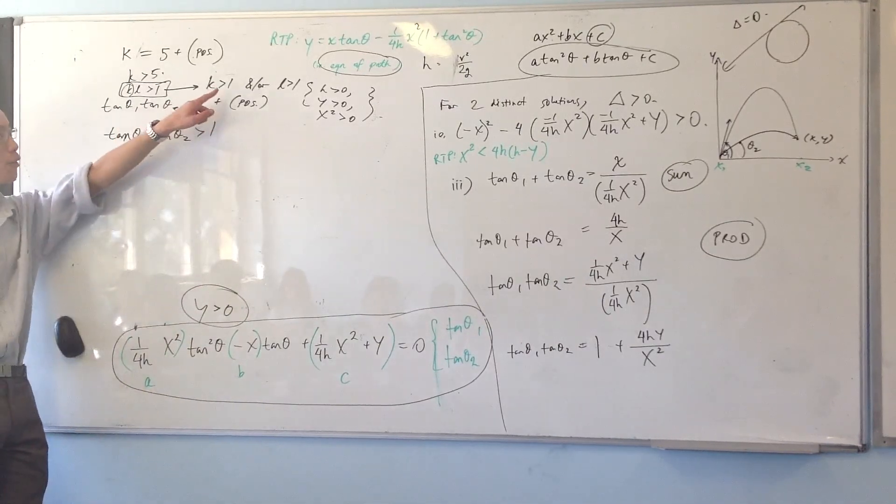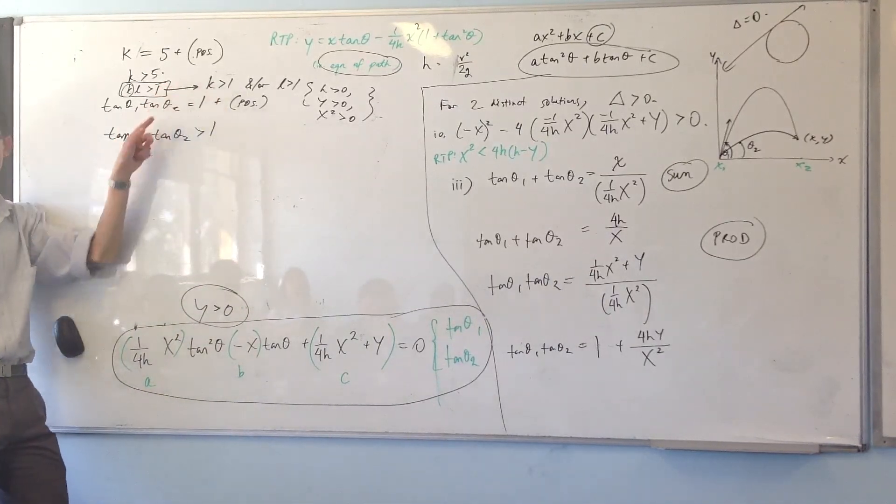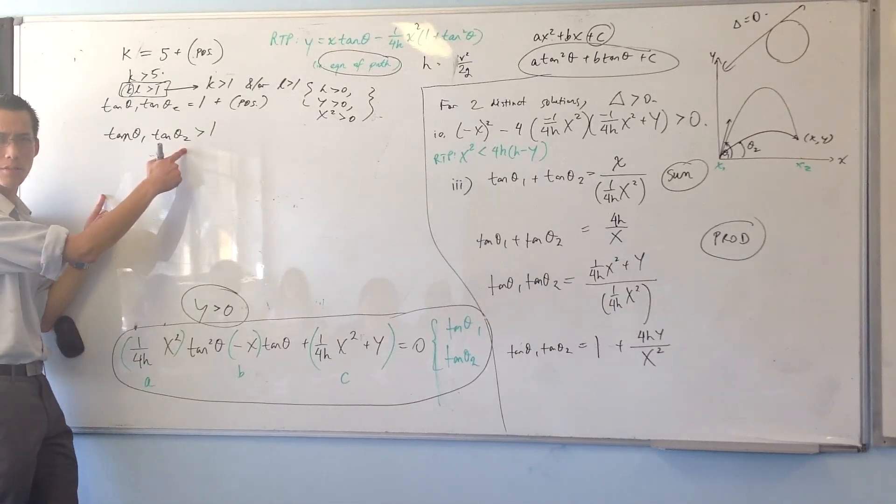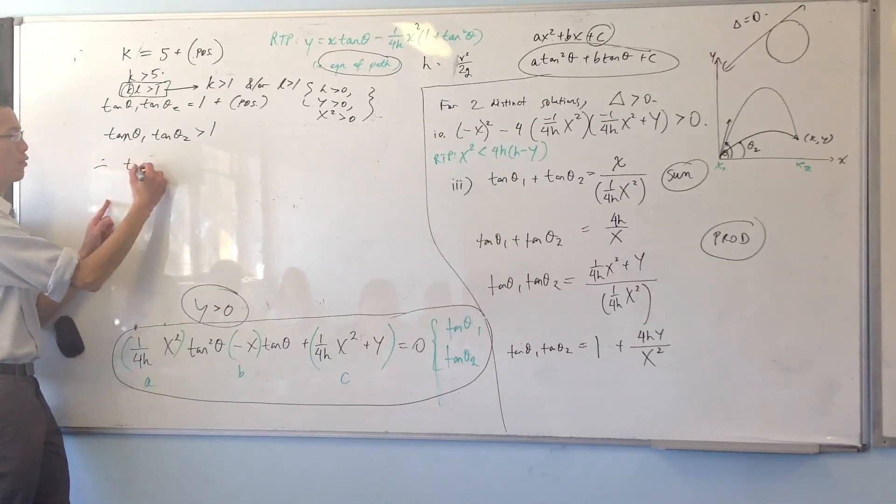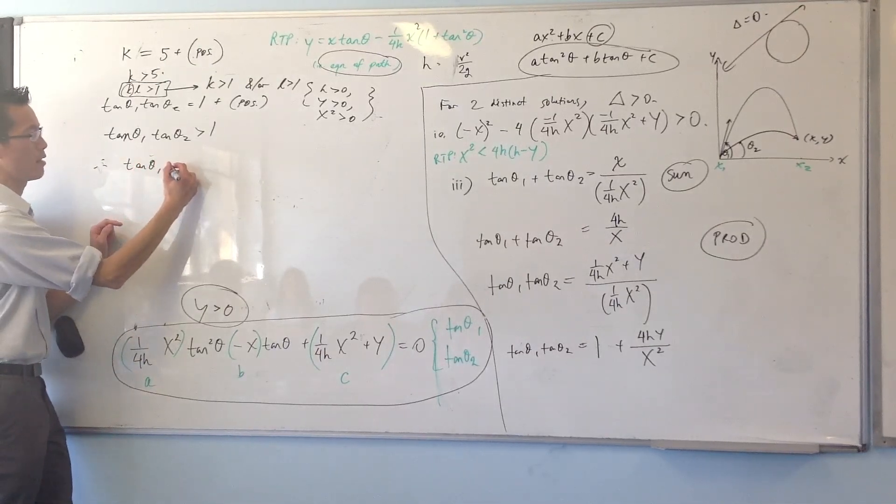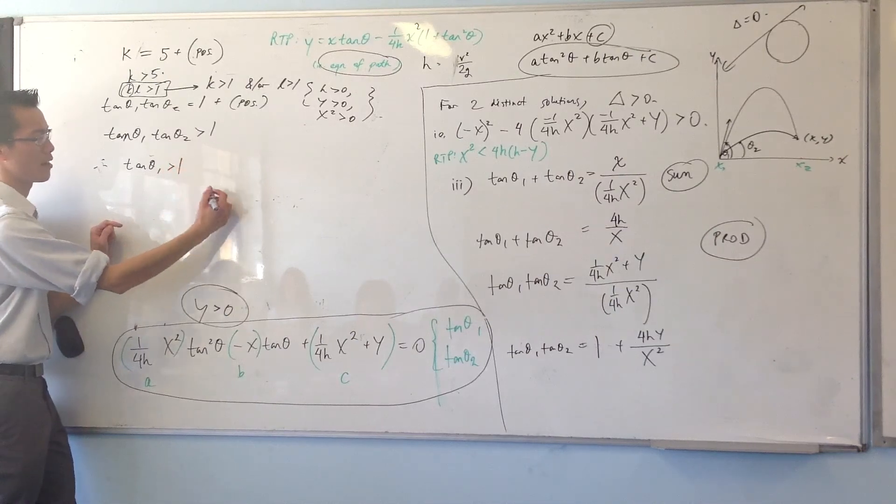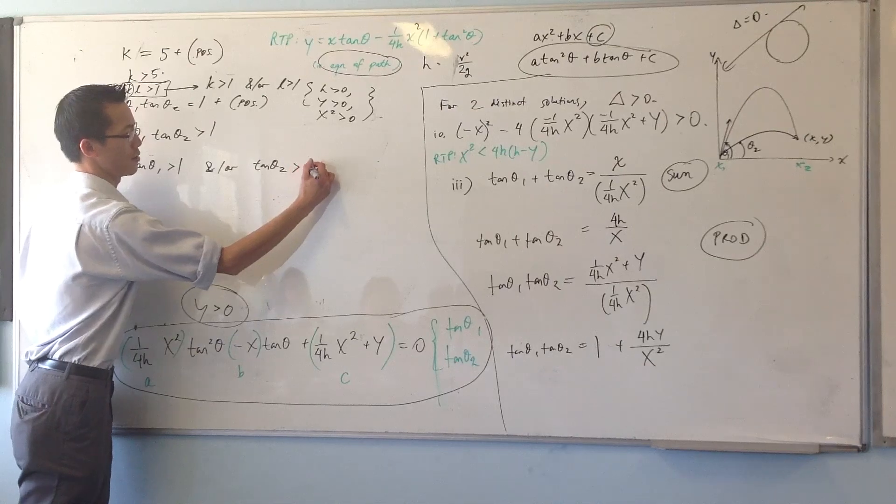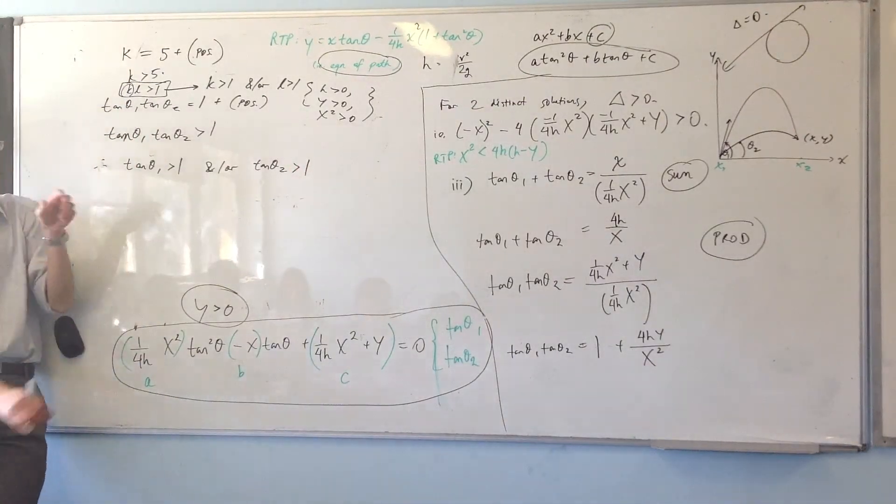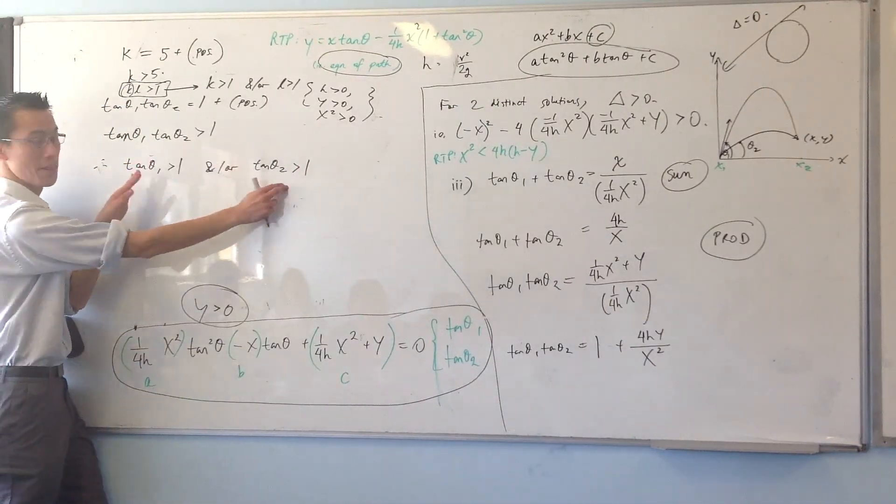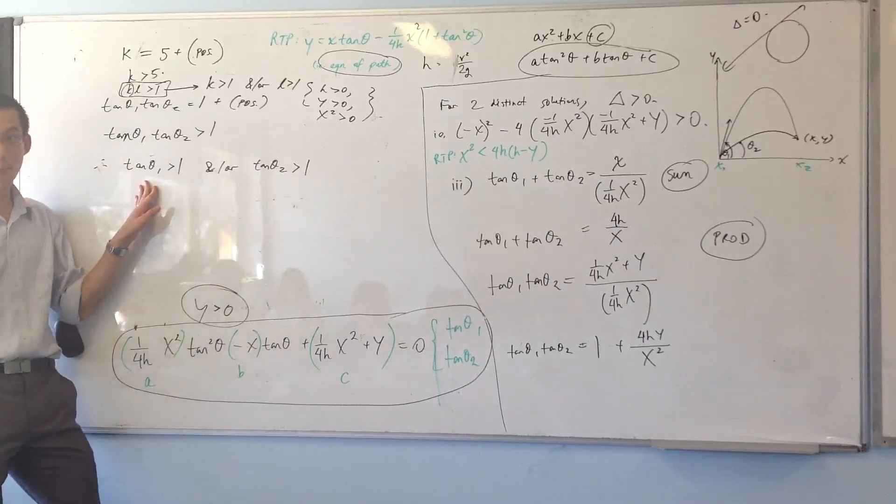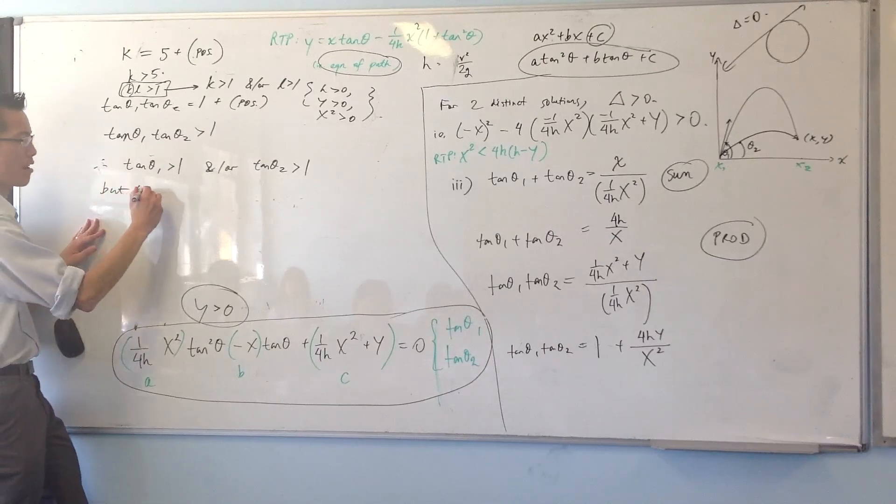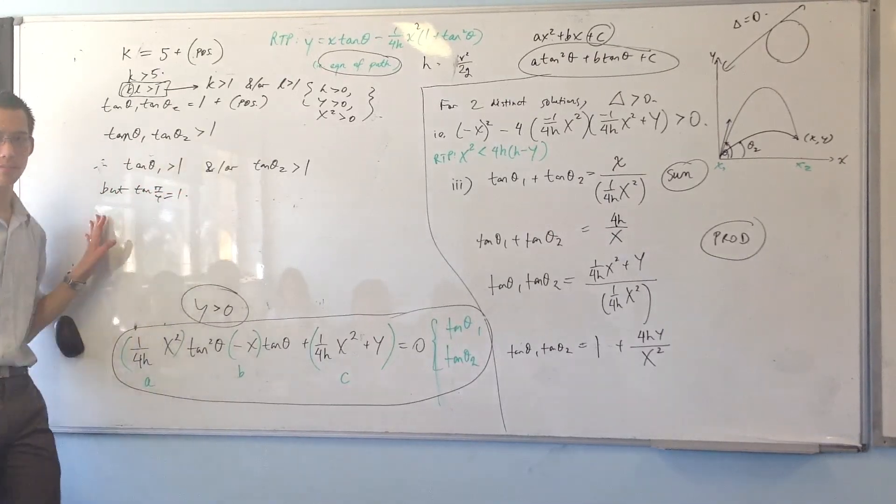All right, so therefore if I go from this statement to here, right, now I can say something independently about each one. Can you see where I'm trying to get at? I've got therefore, therefore tan theta 1 has to be greater than 1 and or tan theta 2, right? So you can see how I've gone from this product to these two independent statements, okay? But you see now why it's pi on 4. Tan of pi on 4, right, that's equal to 1. It's 1045, right?